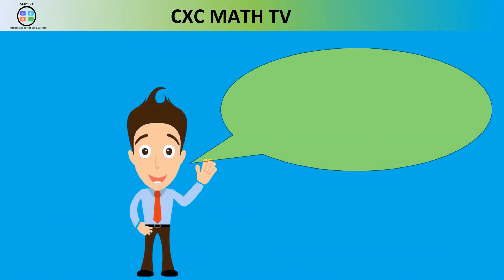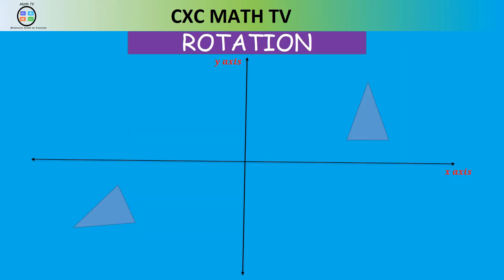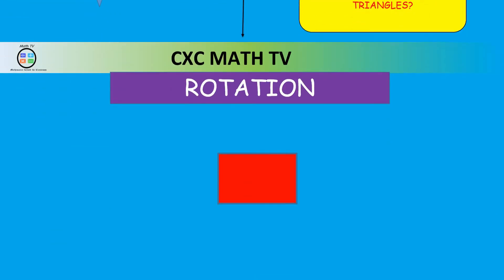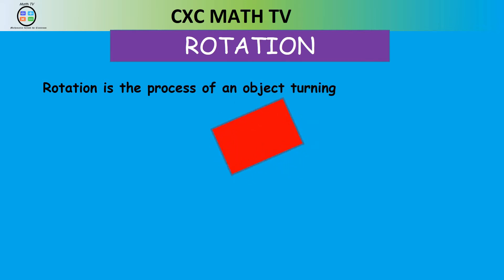Hello, welcome to CXC Math TV. Today we will be looking at rotation. Look at the two triangles in the diagram — what is the relationship between them? The title gave it away: rotation is just the process of an object turning, as we can see with that red object there.